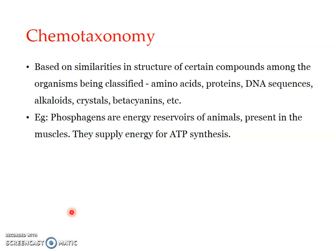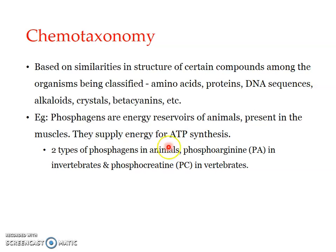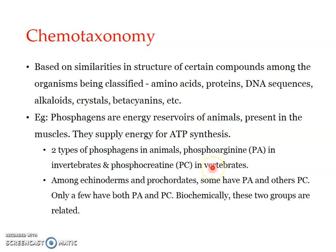One example is with respect to phosphagens. Phosphagens, as the name suggests, are phosphate-generating compounds referring to ATP synthesis. They are energy reservoirs present in animals, especially located in the muscles, and they supply energy for the synthesis of ATP. There are two kinds of phosphagens in animals: phosphoarginine and phosphocreatine. Phosphoarginine is present in invertebrates while phosphocreatine is present in vertebrates.